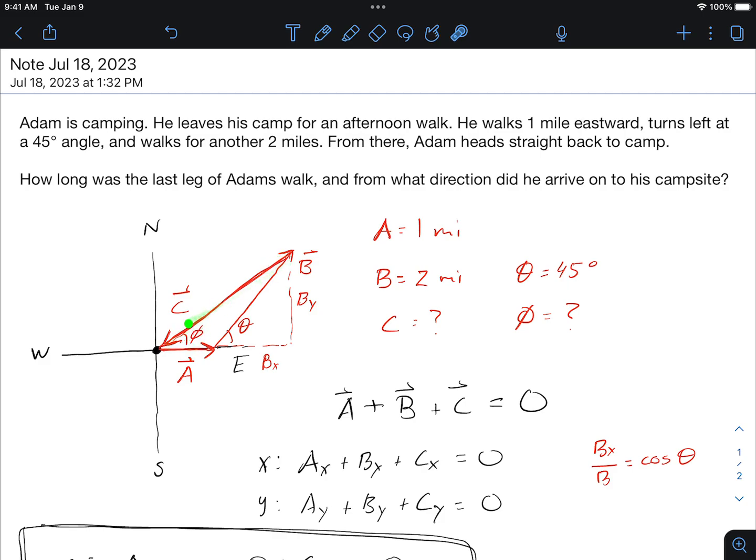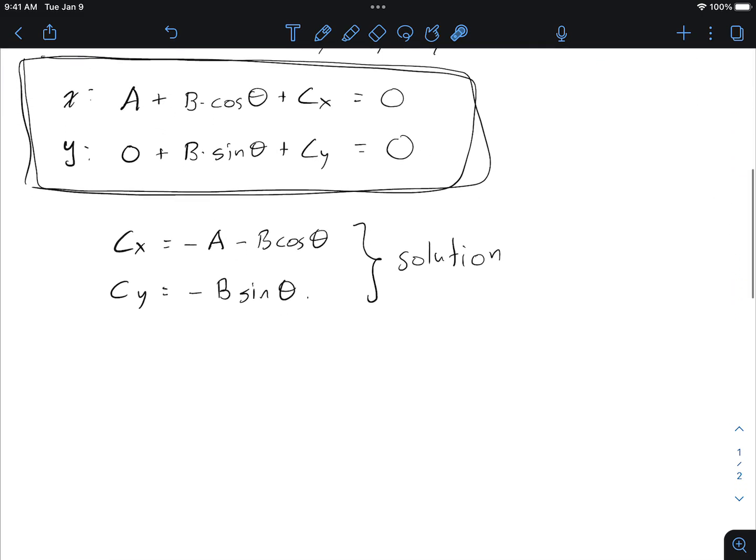Well what is the length of the vector? The length of the vector c squared is given by cx squared plus cy squared and so that means that c is just the square root of cx squared plus cy squared. So this is my solution.